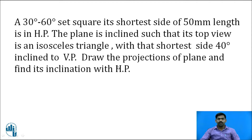Read the problem and note down the given data. Here, a 30-60-90 set square is given where the shortest side is 50mm in length and it is in the HP, so the primary position in the first stage — the set square is drawn in the HP. Now, the shortest side is 40 degrees inclined to the VP.